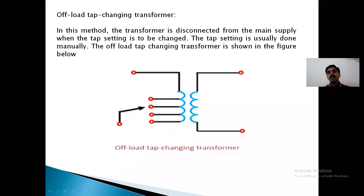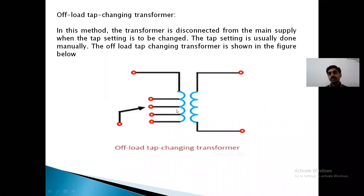Offload means we have to first de-energize the transformer — the transformer must be disconnected from the main supply. Then the tap changing should be done manually, and then reconnect the transformer again.